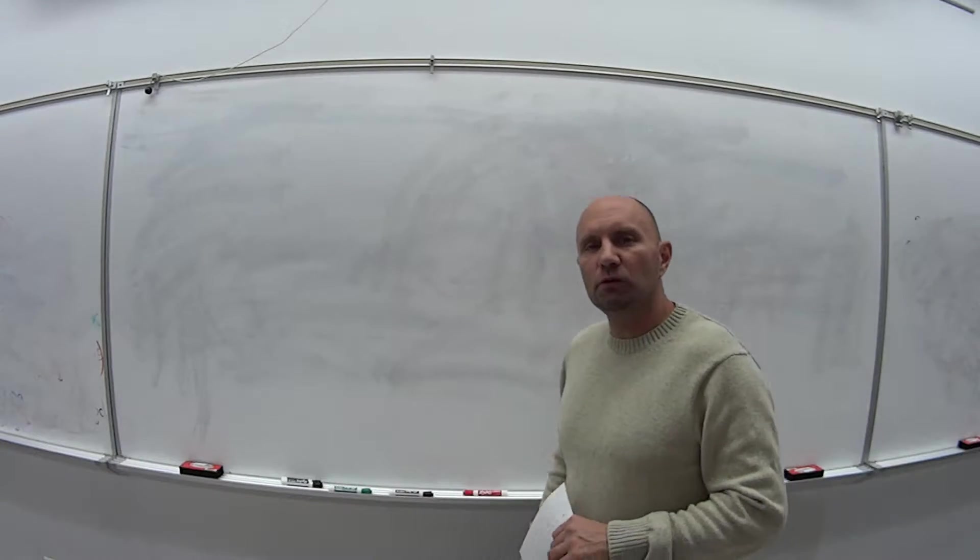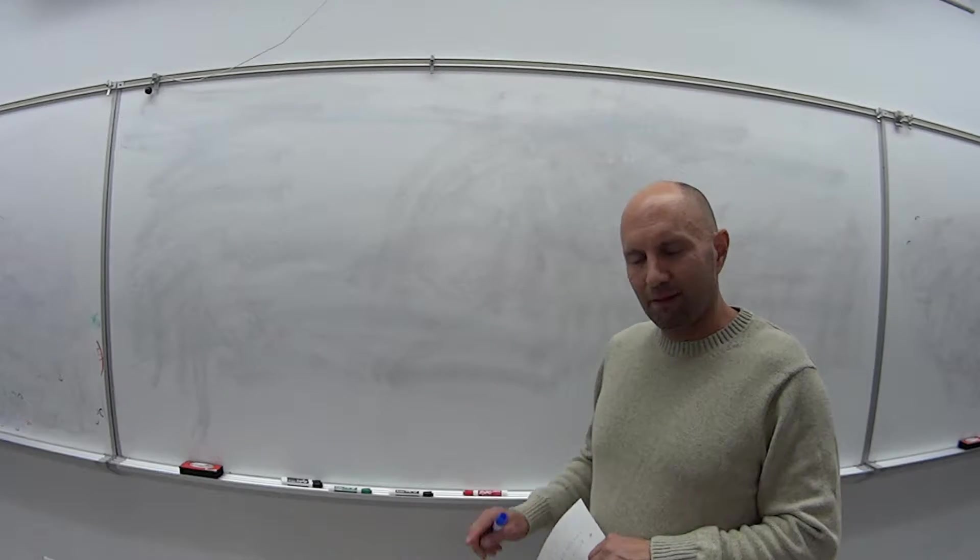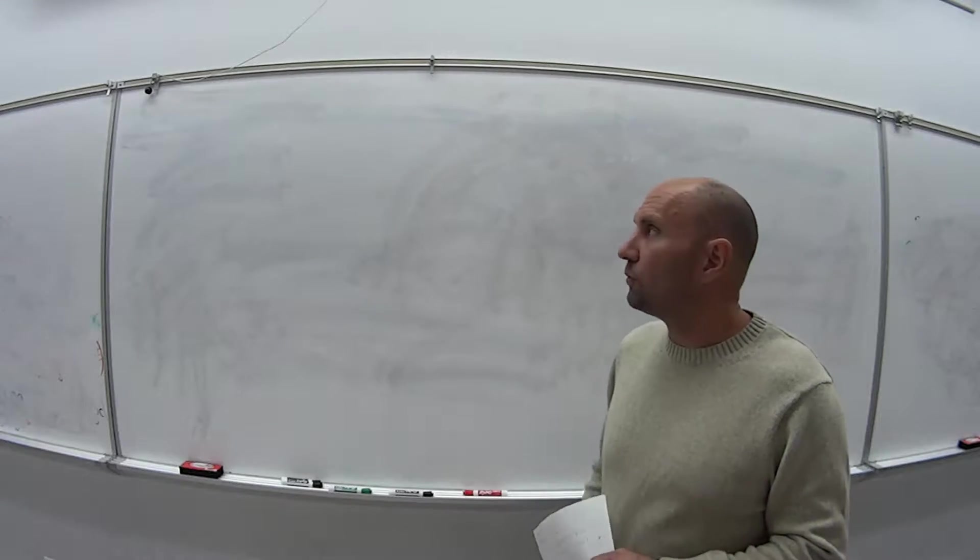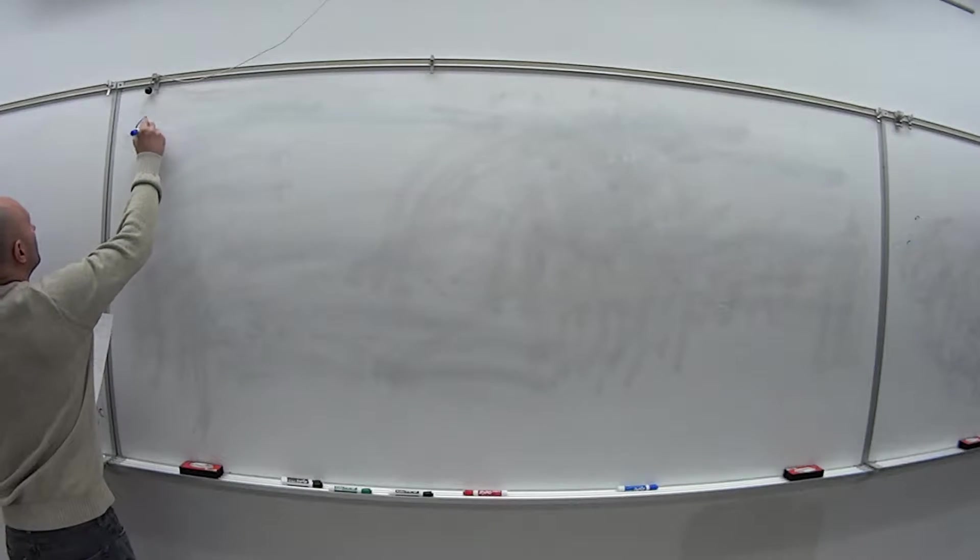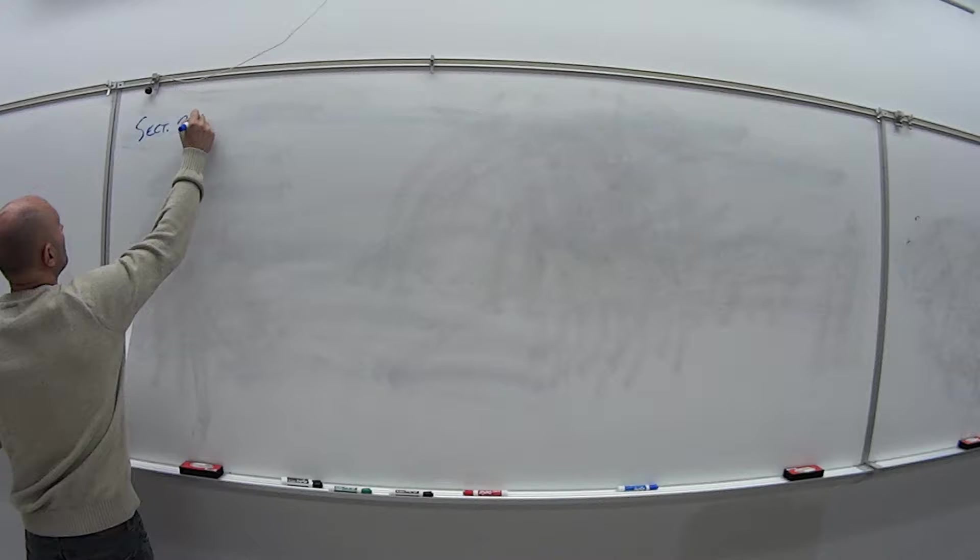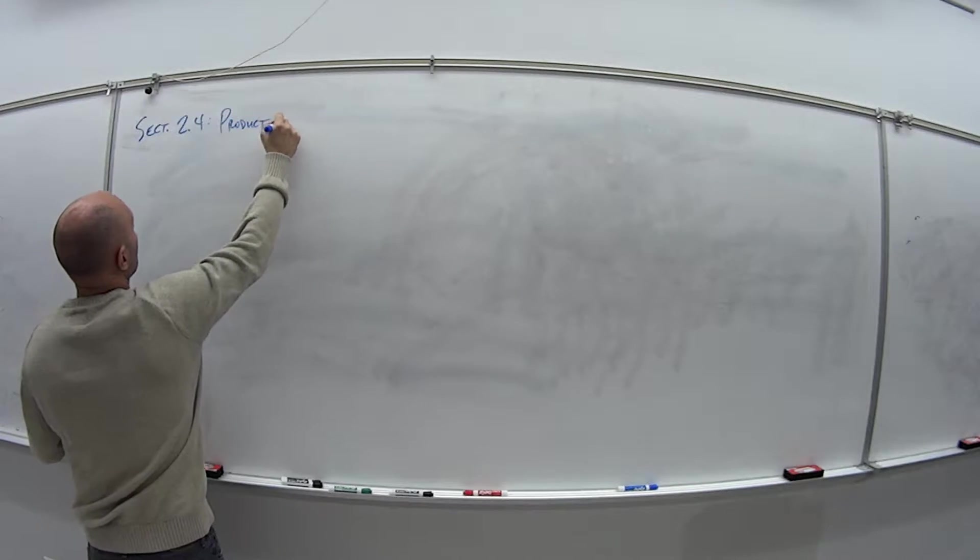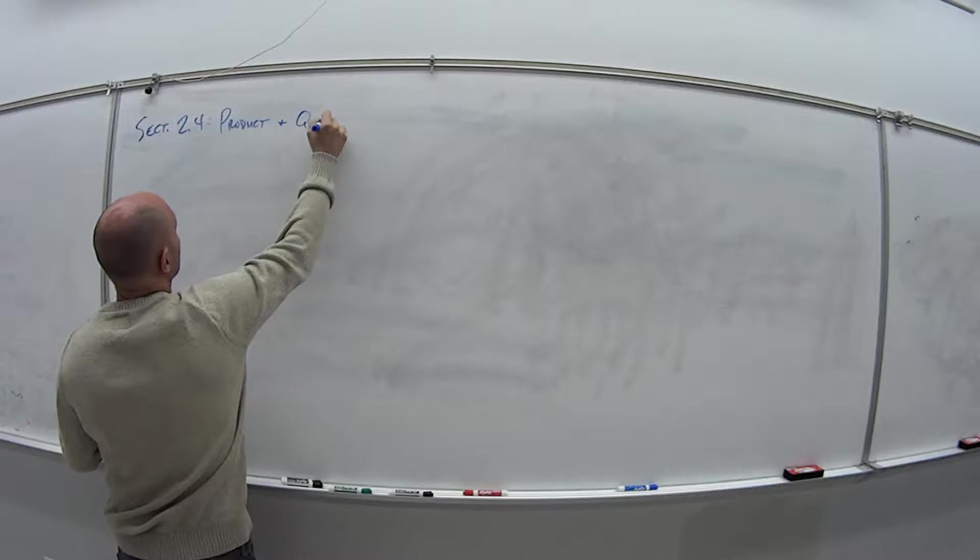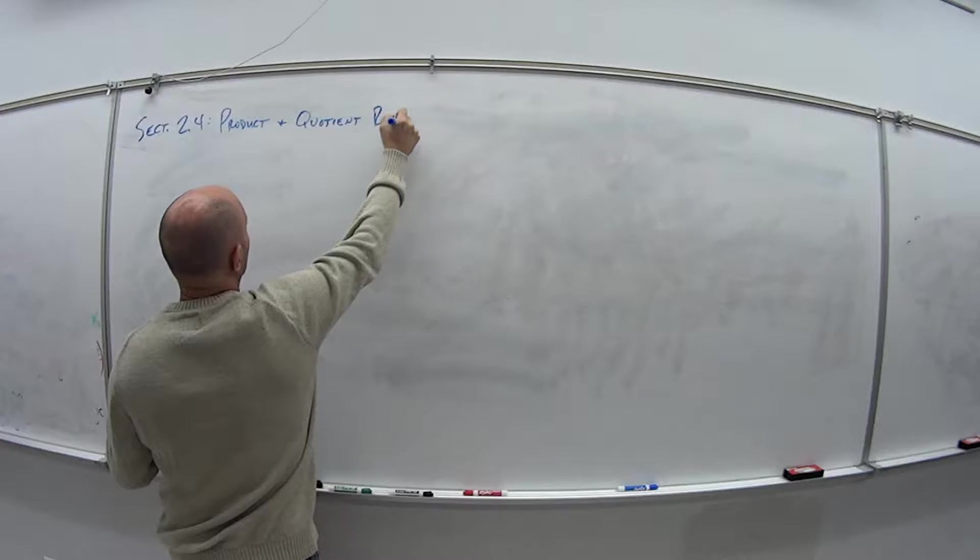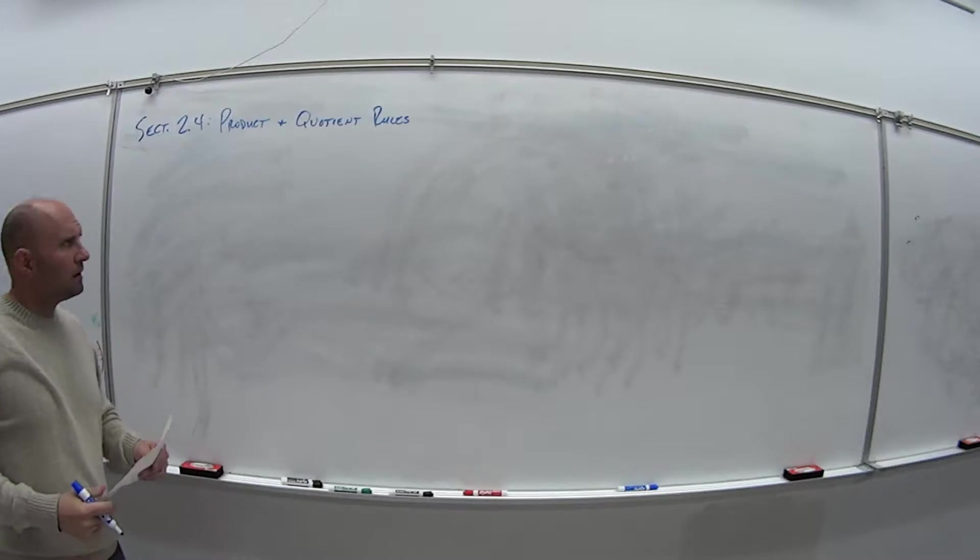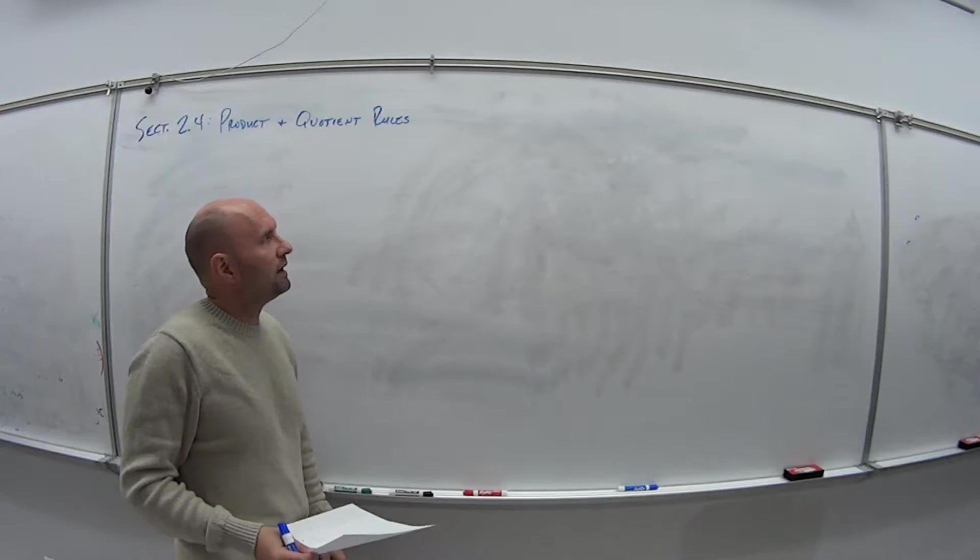Hi and welcome to the videos for section 2.4 for Math 181. This is the first of two videos. Section 2.4, we look at the product and the quotient rules for derivatives. We're also going to look at the other derivatives for the trig functions. I don't wrap up this video.